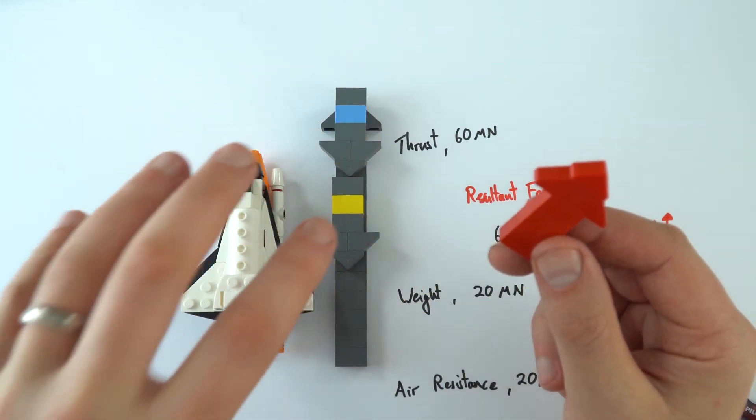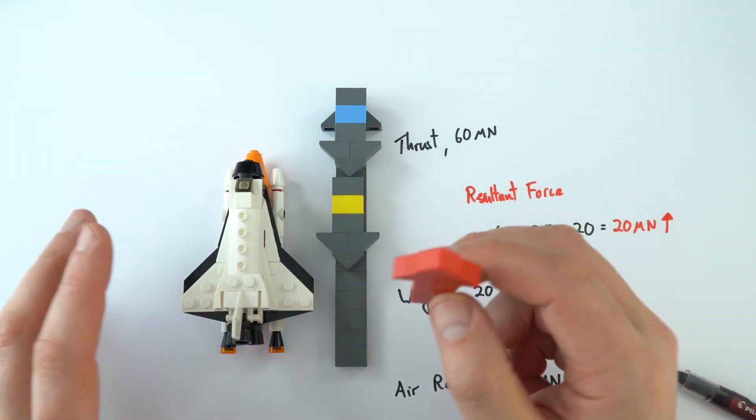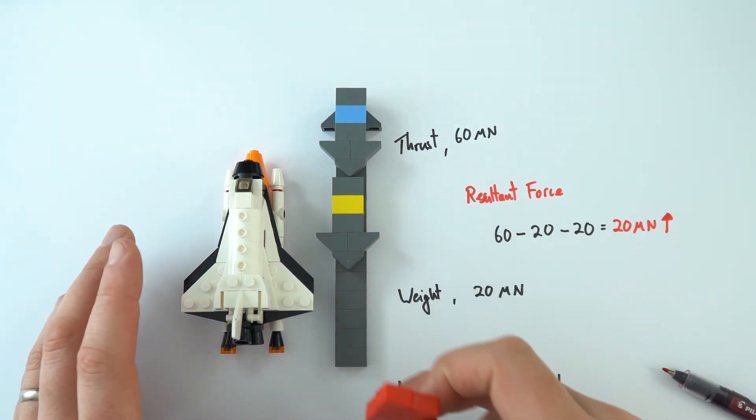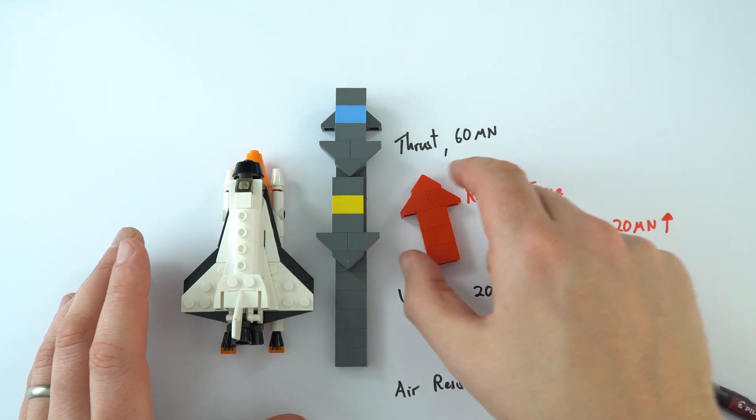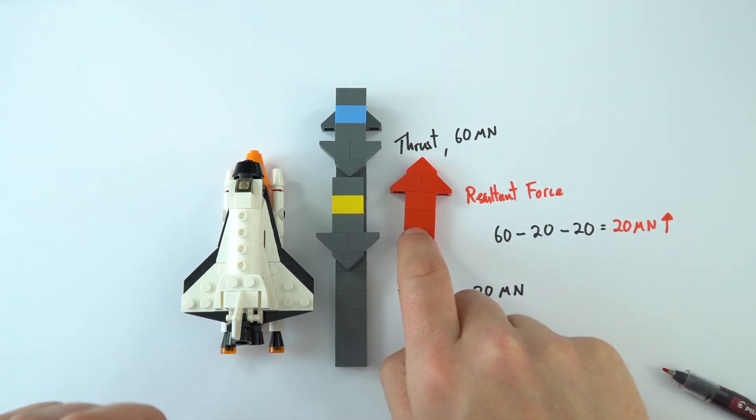But in the kind of simple case, which is going to be loads of the kind of questions you're going to be doing at GCSE, all we're thinking about is replacing all of these forces with one equivalent arrow that we call the resultant force.